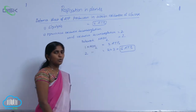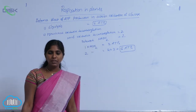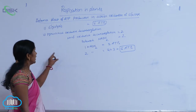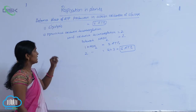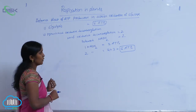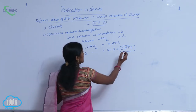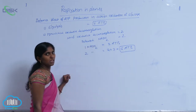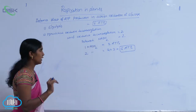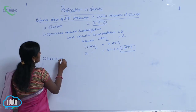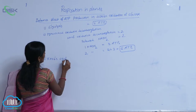So in glycolysis, how many ATPs? 6 ATPs. In the pyruvic acid oxidative decarboxylation, how many ATPs? 6 ATPs. Totally 12 ATPs. Then you enter the Krebs cycle.